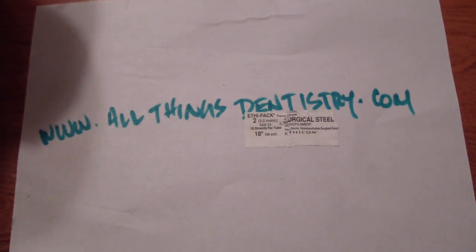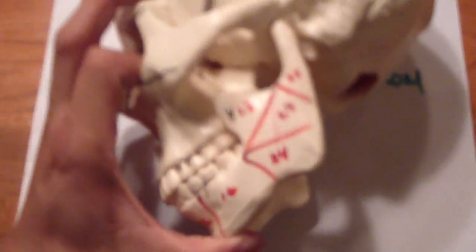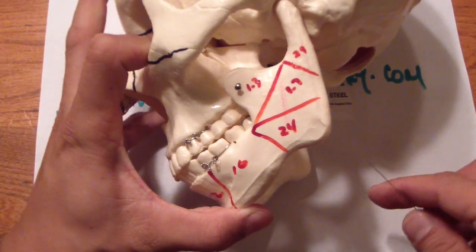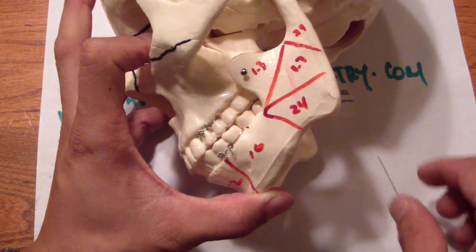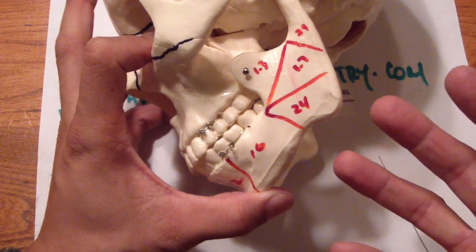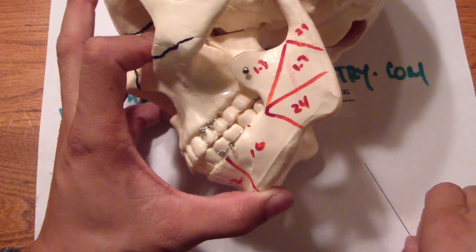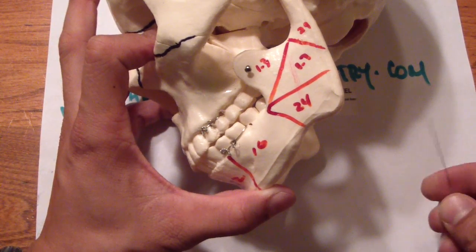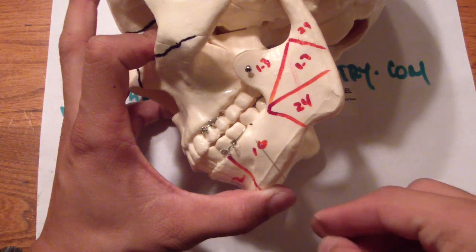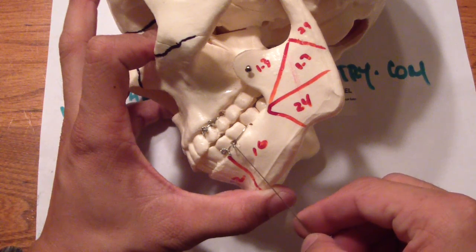Hey there, welcome back. Ashley at AllThingsDentistry.com. We're covering mandibular maxillofacial fixation with Ivy loops. We use this technique when we're deployed somewhere or we have a mandibular fracture and we need to get the fracture reduced and then to an oral surgeon.